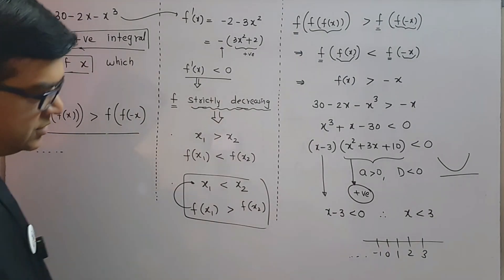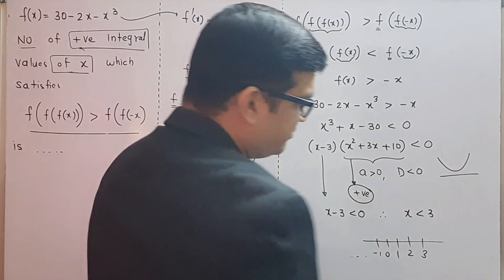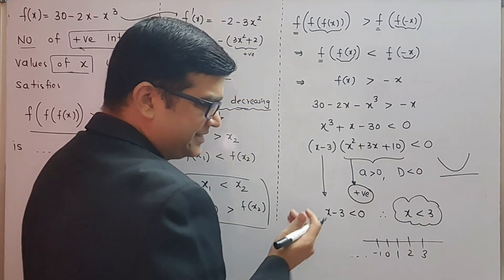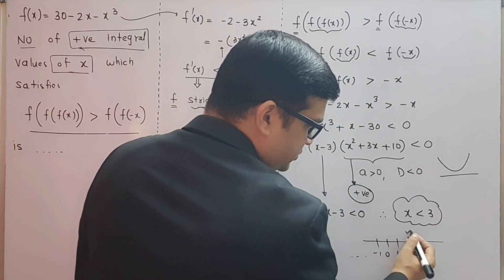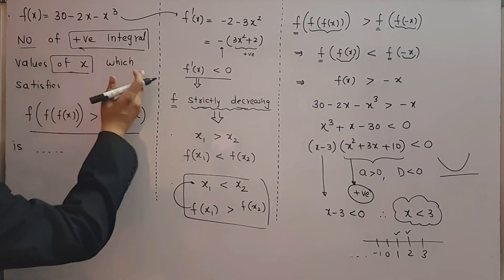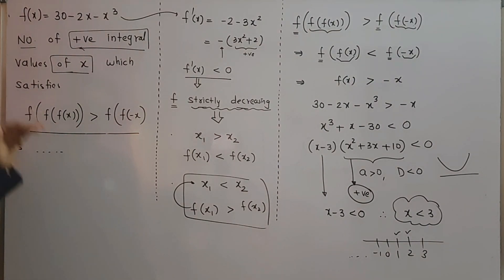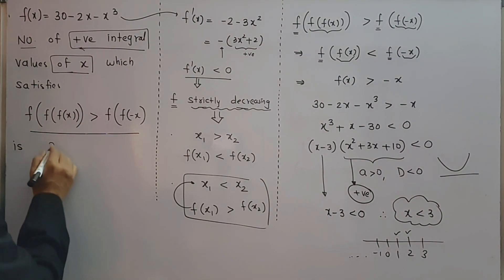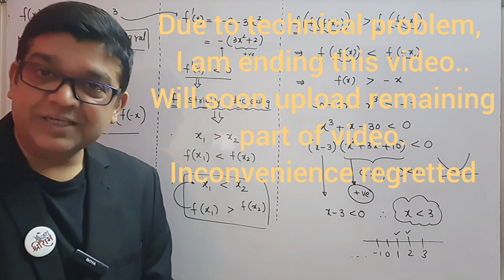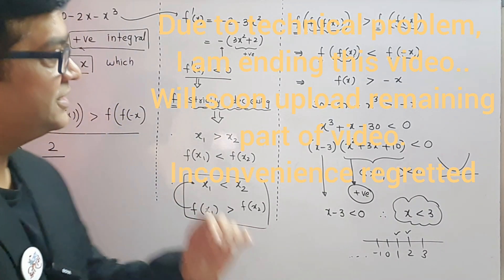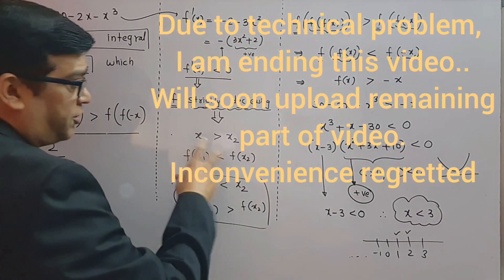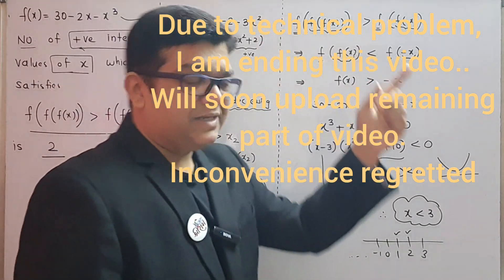But what is the question asking? If you see, number of positive integral values of x which satisfies this. x is less than 3, so it will be just one value and two values. So the number of positive integral values of x satisfying this inequality is 2. So many concepts were used in this one single question, right?